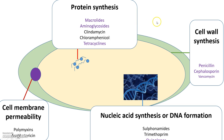We have the cell wall synthesis inhibitors, which block bacterial cell wall synthesis — mainly the penicillins, cephalosporins, and also vancomycin. Then we have the protein synthesis inhibitors, which inhibit bacterial protein synthesis. These include macrolides like erythromycin, aminoglycosides like gentamicin, and tetracyclines.